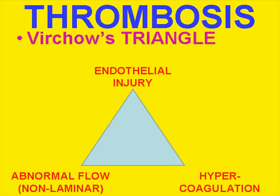Rudolf Virchow, the father of pathology, has many contributions to the way we think about diseases, starting with the statement that all diseases are the result of abnormal histology. He also has a major role in coagulation and developed a triangle that lasts till today. Though there are two dozen things that contribute towards thrombosis, they can all be summarized in three categories: Virchow's triangle of endothelial injury, abnormal flow, and hypercoagulation.